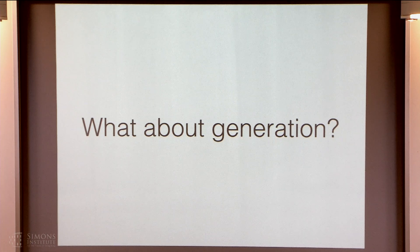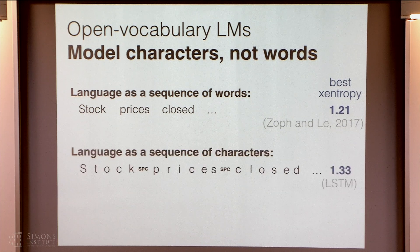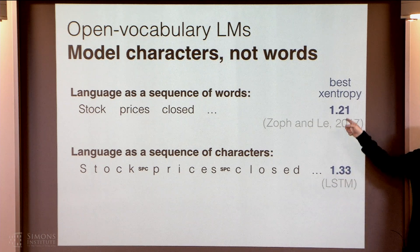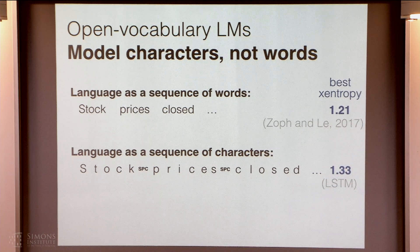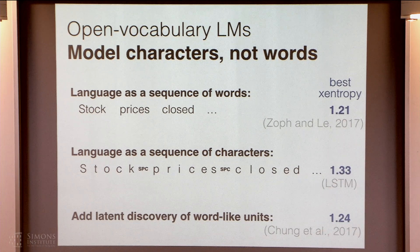Now what about generating language — we don't always want to just read it, sometimes we want to produce it. Basically, we should model things as a sequence of characters, and when we do that we actually don't lose very much. Lower is better here. If we add something like a latent discovery of word-like units, this is the best published number based on characters. We get better results and this is Penn Treebank modeling.